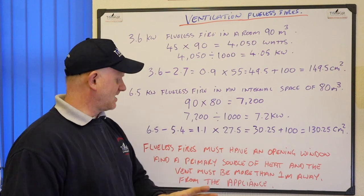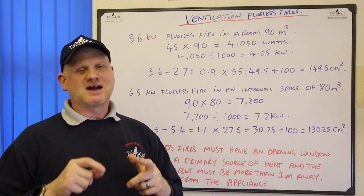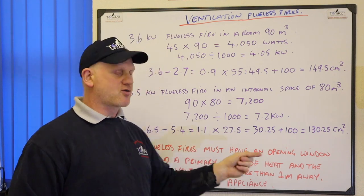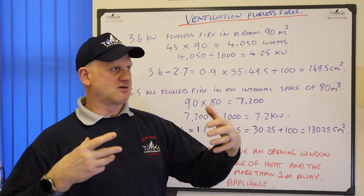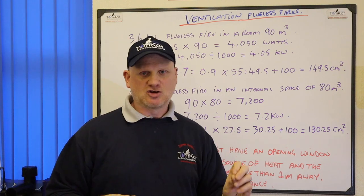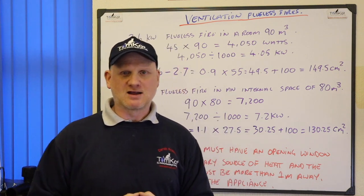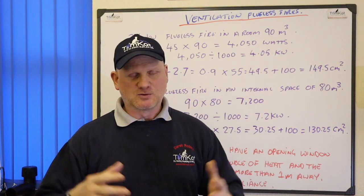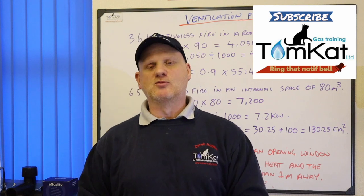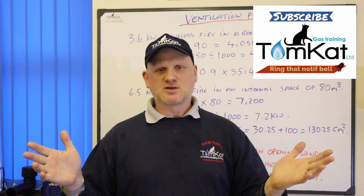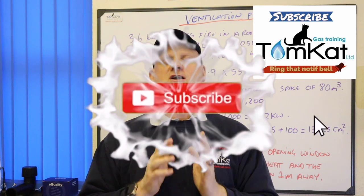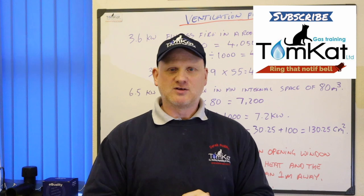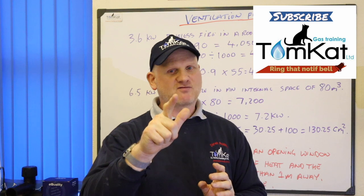Just remember: all flueless appliances require an openable window whether it's a cooker, water heater, or space heater. The flueless space heater also requires a primary source of heat in the room or internal space — so it needs a radiator. The ventilation must be at least one metre away from the appliance to stop the ASD (atmospheric sensing device) or ODS (oxygen depletion system) from vitiating the room. If you liked this video, give it a thumbs up or leave a comment. Subscribe and hit the notification bell — thanks for watching!